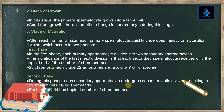Next is the stage of growth. In this stage, the primary spermatocyte grows into a large cell. Apart from growth, there is no other change in spermatocyte during this stage.